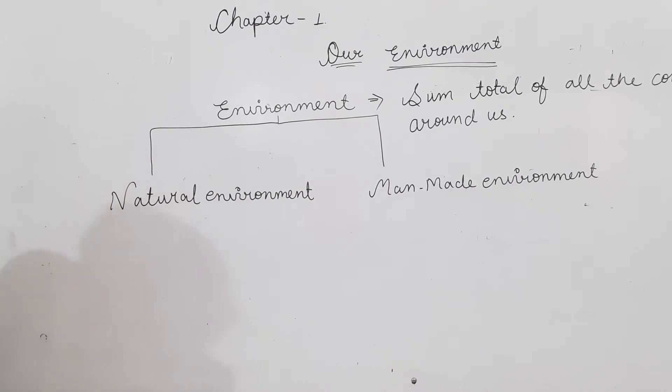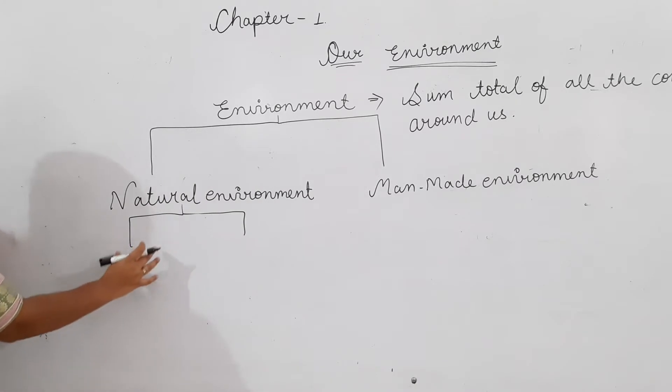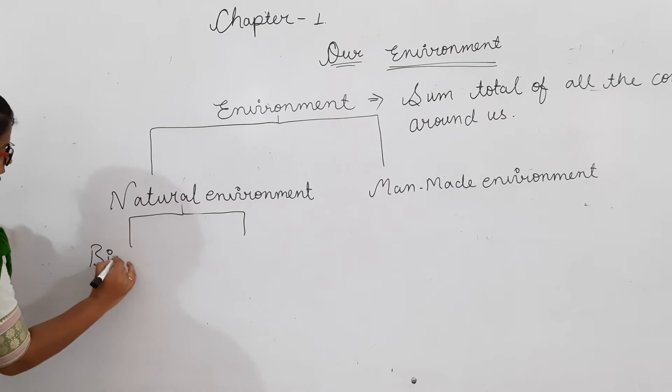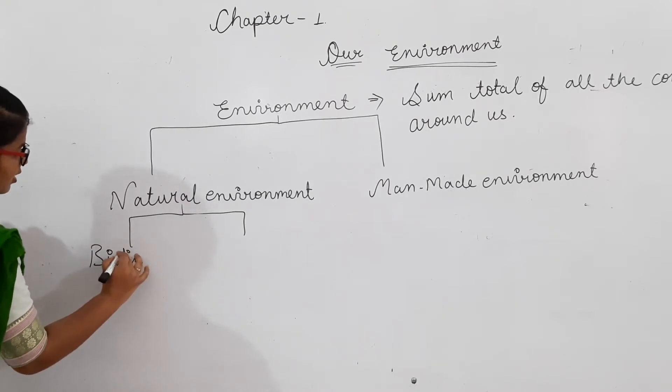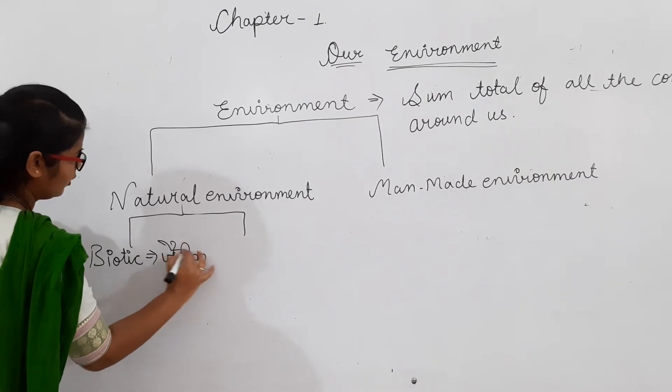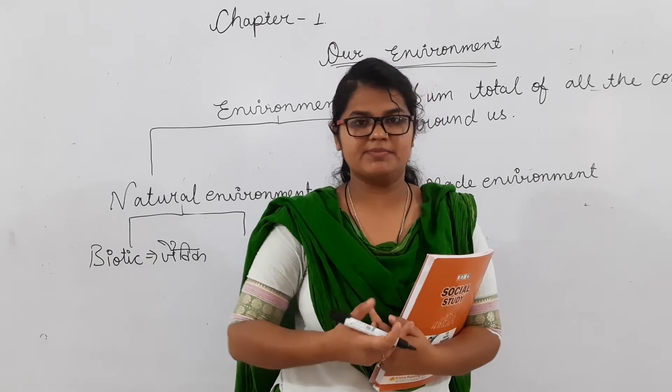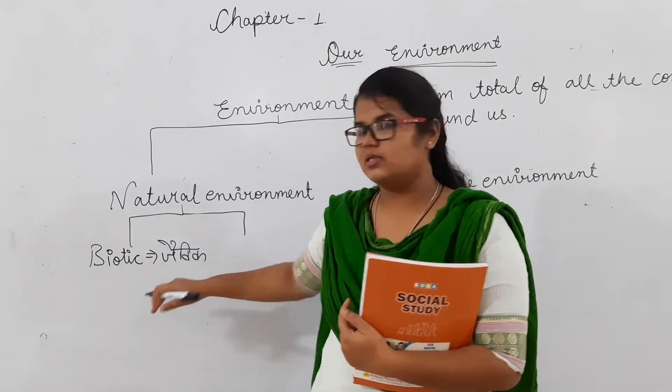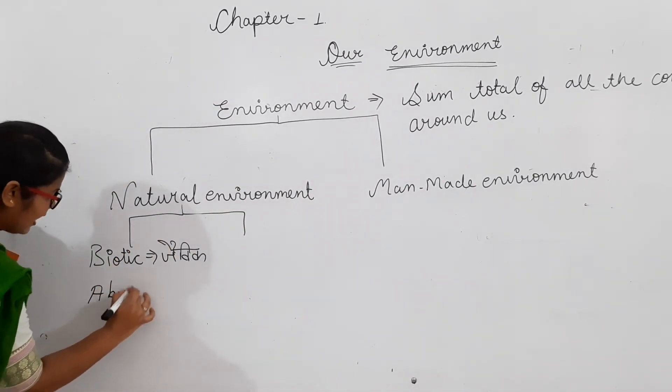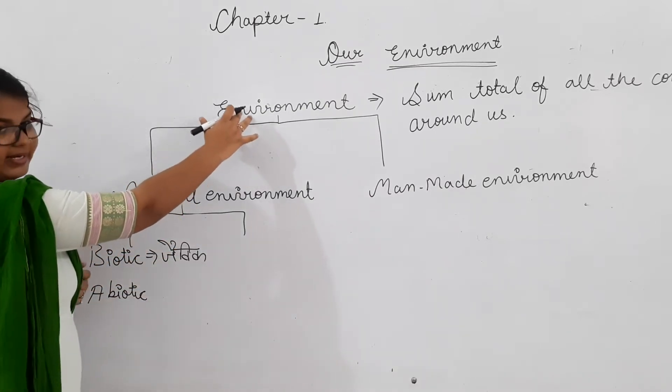Natural environment is divided into biotic and abiotic components. We will discuss these. First, biotic means all the living organisms, all the living things are included in this. Abiotic are natural things that are not living but are part of environment.